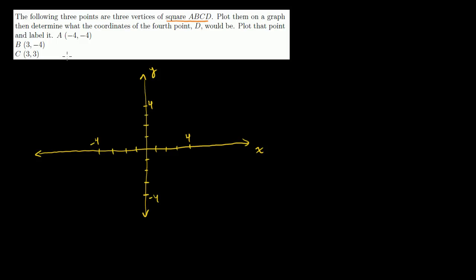Let's plot these points. Point A is at negative 4, negative 4 — x is negative 4, y is negative 4, so we drop down there. Now, these sections of the coordinate plane are labeled: this is the first quadrant, this the second quadrant, this the third quadrant, and this the fourth quadrant — using Roman numerals I, II, III, and IV. So point A is in the third quadrant.